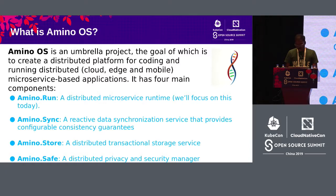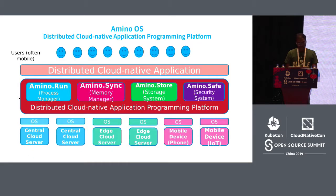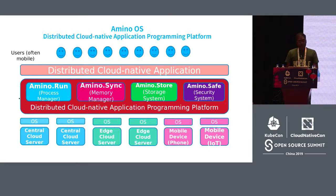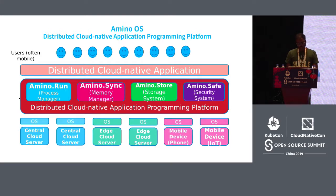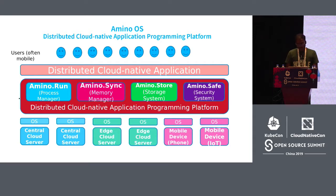We are going to talk about Amino Run today — Irene will be describing it in detail. Just wanted to give the context of where Amino OS fits. What we really want you to be thinking is that distributed cloud-native applications don't actually have to worry about which piece of code runs on which machine — the operating system has to take care of that. Amino OS is a unified system that provides microservice runtime, memory management, storage, and security components, running across all operating systems in the network.